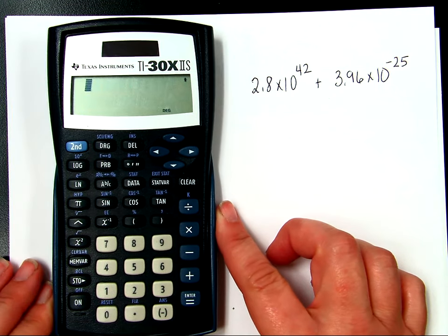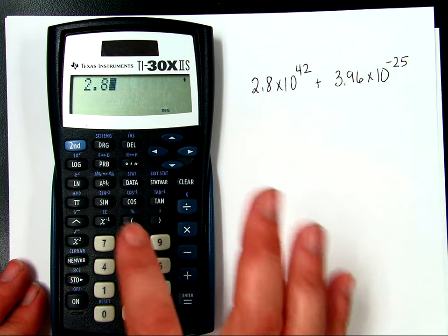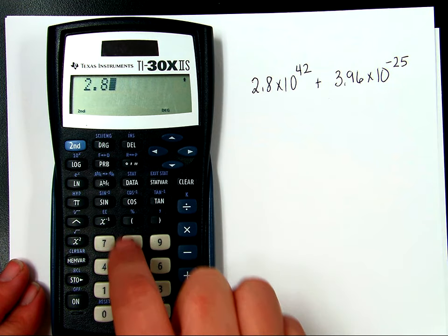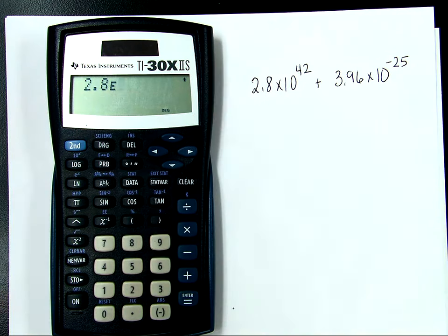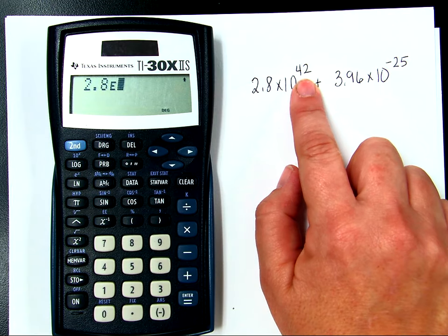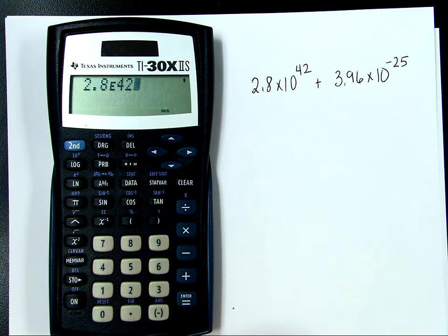So now I'm going to enter that number into the calculator. I'm going to hit 2.8, I hit the second function and that EE. Now, for this calculator, that E is the same as saying times 10 to the. All I now need to enter is my exponent, which is 42, and I'm done.